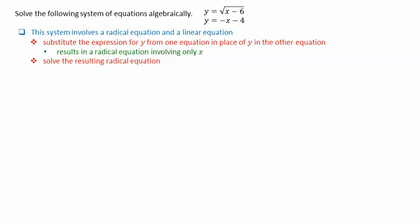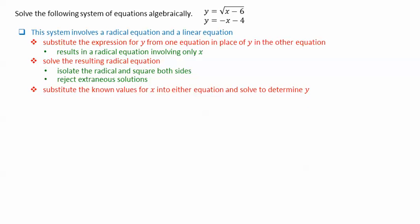We'll solve the resulting radical equation. To do this, we isolate the radical and then square both sides, making sure that we reject any extraneous solutions. We then substitute the known values for x into either equation to determine the y values.